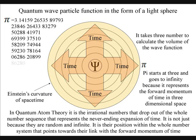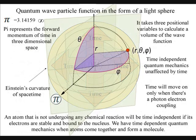The wave function expands as a volume of space in the form of a light sphere. It takes three numbers to calculate a volume of space, and the decimal expansion of pi starts at the number three.